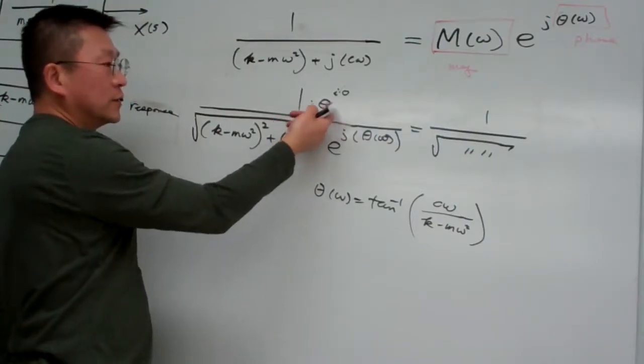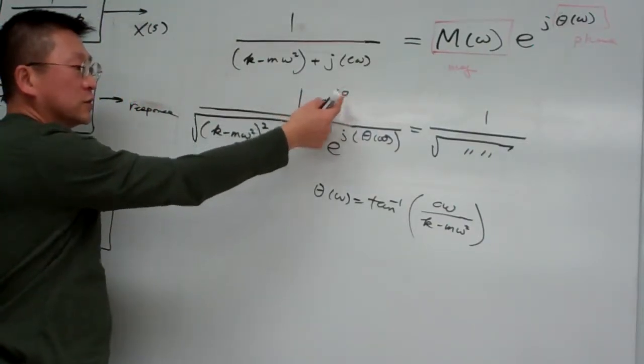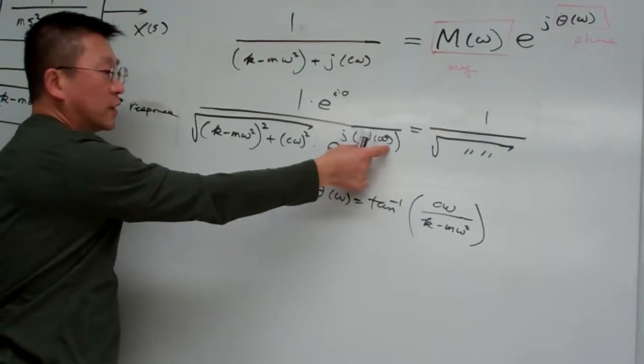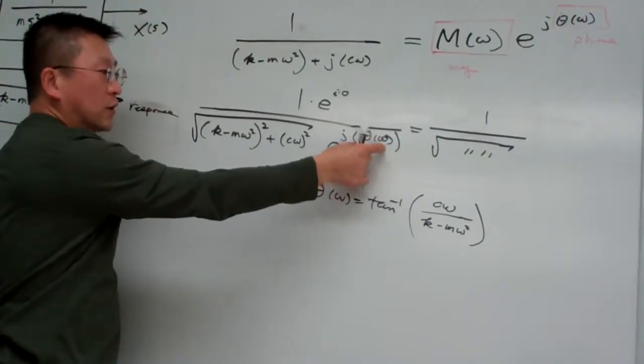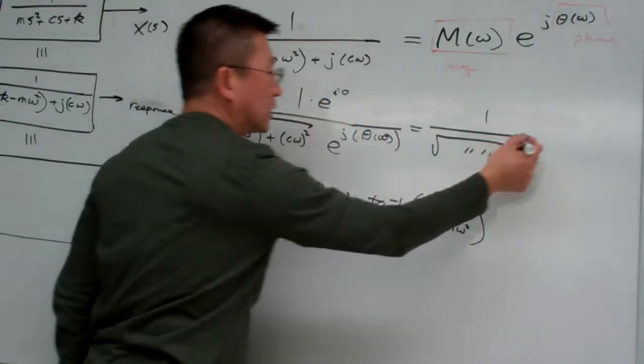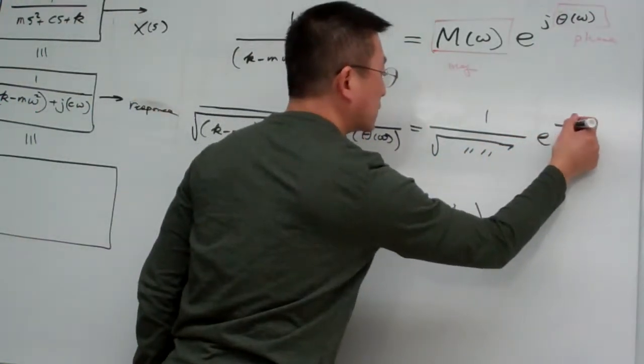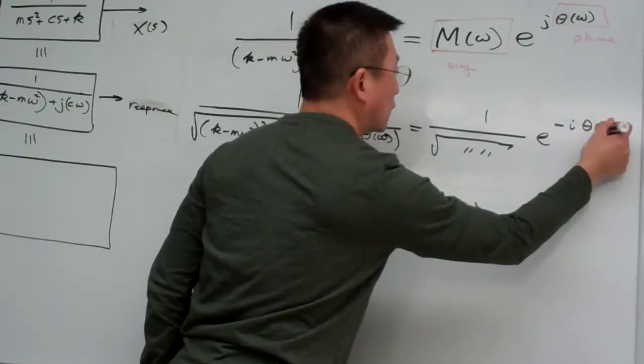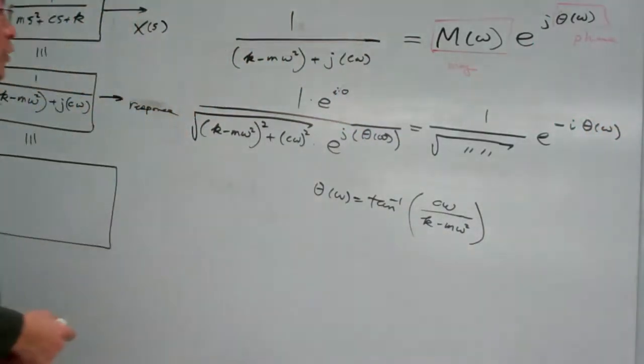And denominator has the phase angle such that big. So their division simply is the subtraction of this from here, so that is equivalent is e to the minus j theta omega. Okay, so basically from here we have the information.